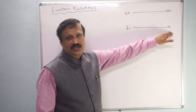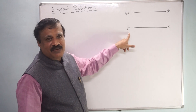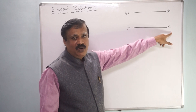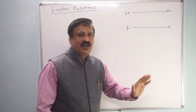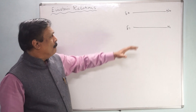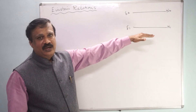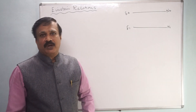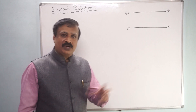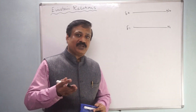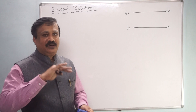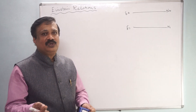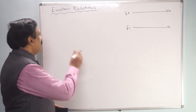Here, the ground state energy level is E1 and the excited state energy level is E2, with number of atoms N1 and N2 respectively. In equilibrium, the rate of absorption is equal to the rate of emission. Rate of emission includes two types: spontaneous emission and stimulated emission.